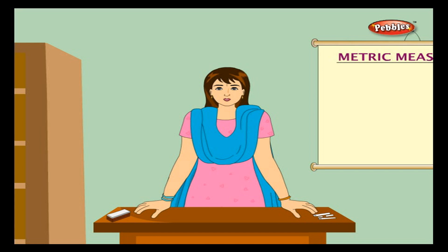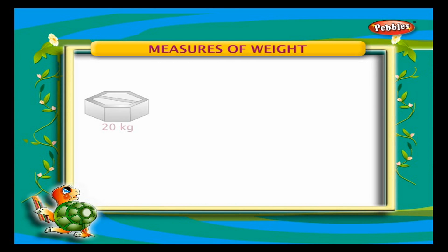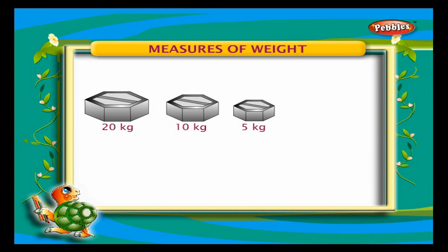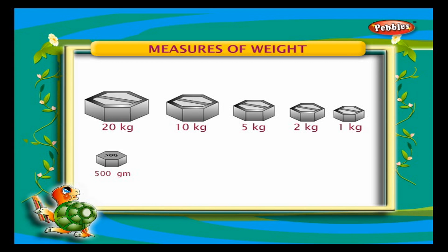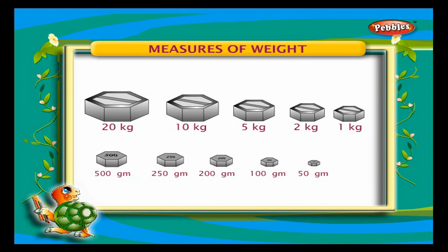Measures of weight: Some goods like vegetables and provisions are weighed with the help of a balance and weights. Kilogram is the unit for groceries and vegetables. The weights come in 20 kg, 10 kg, 5 kg, 2 kg, and 1 kg for measuring rice or wheat in large quantities. There are also weights in 500 g, 250 g, 200 g, 100 g, and 50 g, used to weigh small quantities of groceries and vegetables.